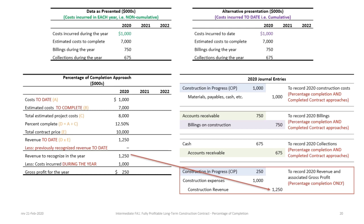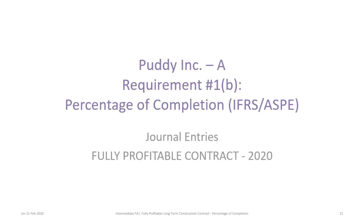If you aren't sure how to treat gross profit, just enter revenue and expenses and the $250,000 difference will be a debit — it's just a matter of remembering where it goes. Now that we've calculated gross profit for year one, we look at the journal entries for the fully profitable contract in 2020 (requirement B), seeing how those journal entries tie into the T-accounts and ultimately to the income statement and balance sheet.